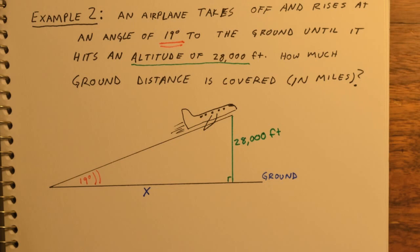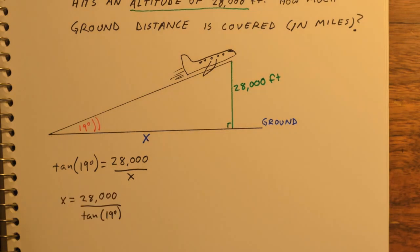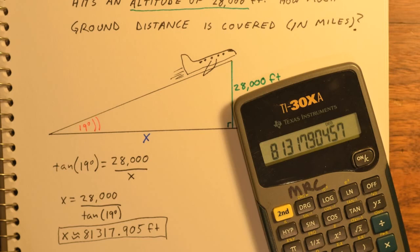Using 19 as the angle of reference, 28,000 is the opposite, x is the adjacent, so we'll use the tangent function. Tan(19°) = 28,000/x. Therefore, x equals 28,000 divided by tan(19°), which gives us x is approximately 81,317.9 feet.